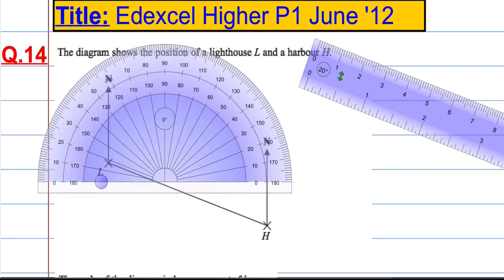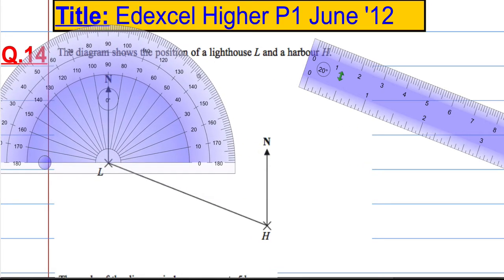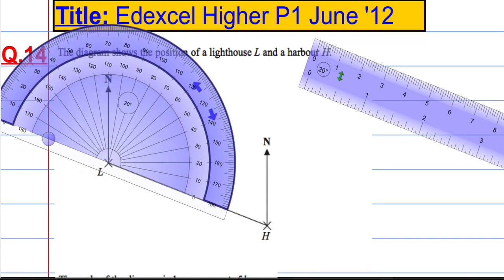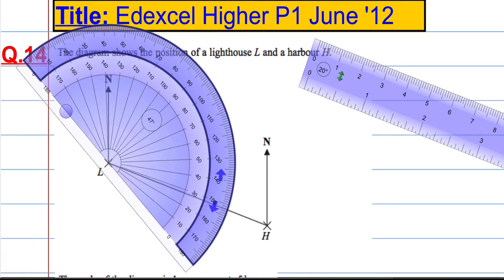So I'm going to put my protractor at L. We're going to measure in a clockwise direction. That's this way. Clockwise direction from the north line. So line it up properly.